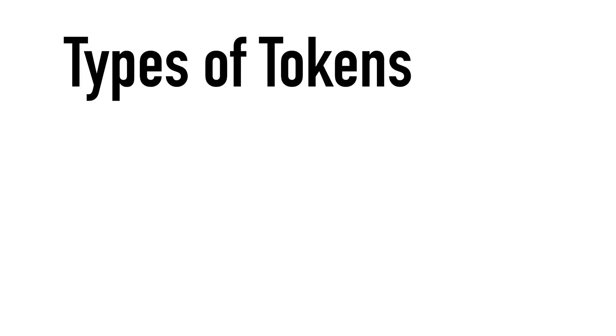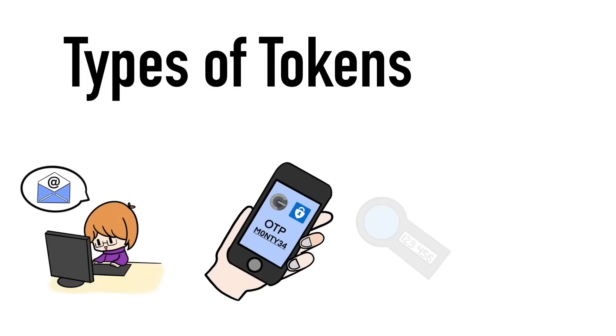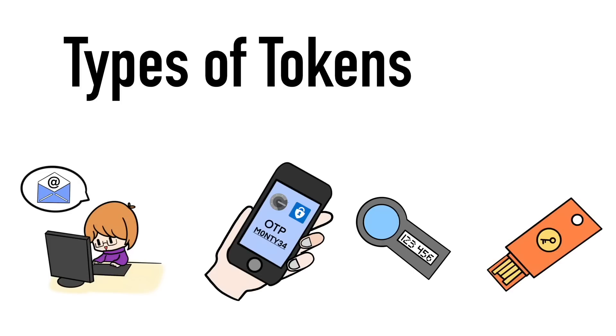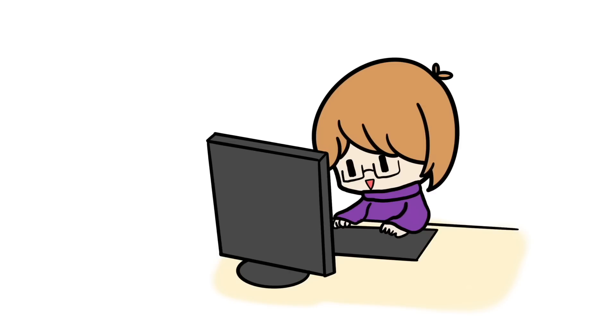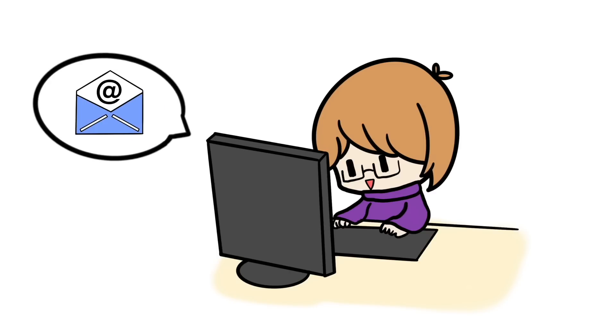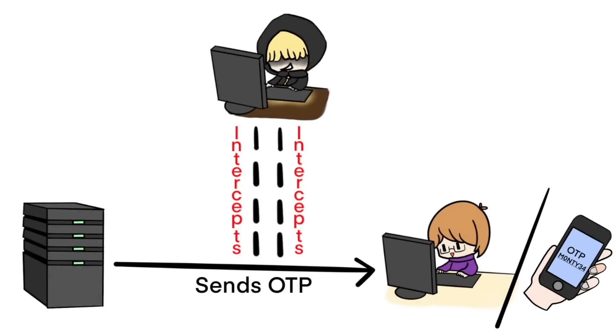There are a few ways to implement 2FA: there's an on-demand token, a soft token, a hard token, and then an updated hard token. The method of 2FA we're all very familiar with is the on-demand version, where we're asked to click on a link that's been sent to our email or phone. The biggest downside of this implementation is that our emails and phones could be spoofed, and bad actors can get to see all our secrets.